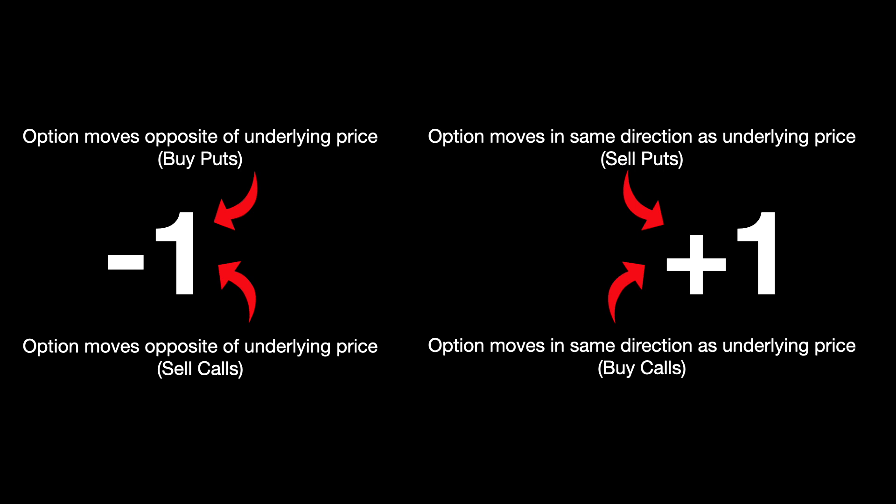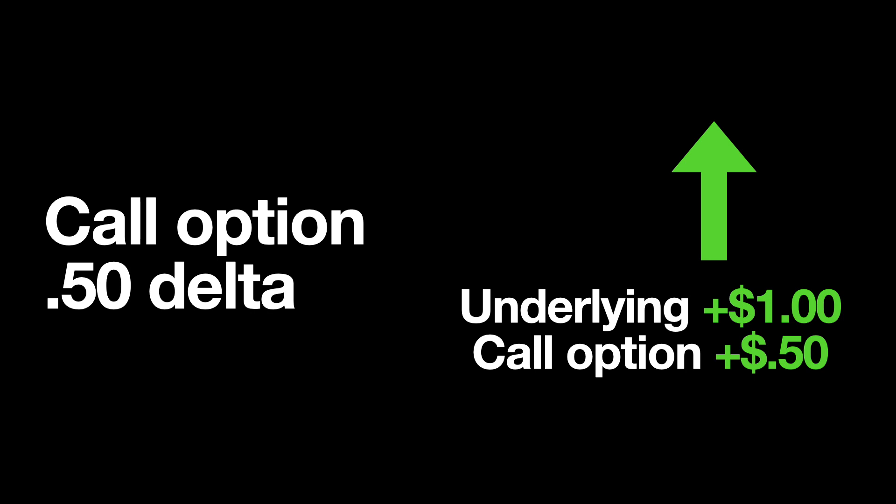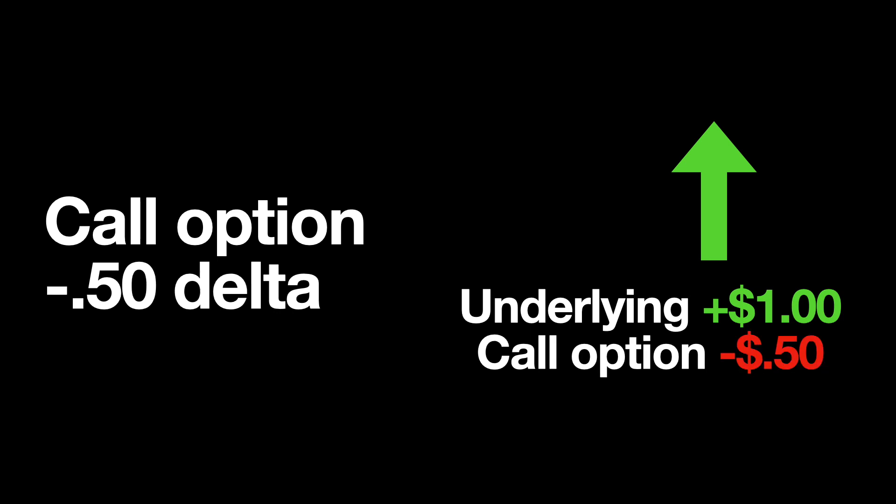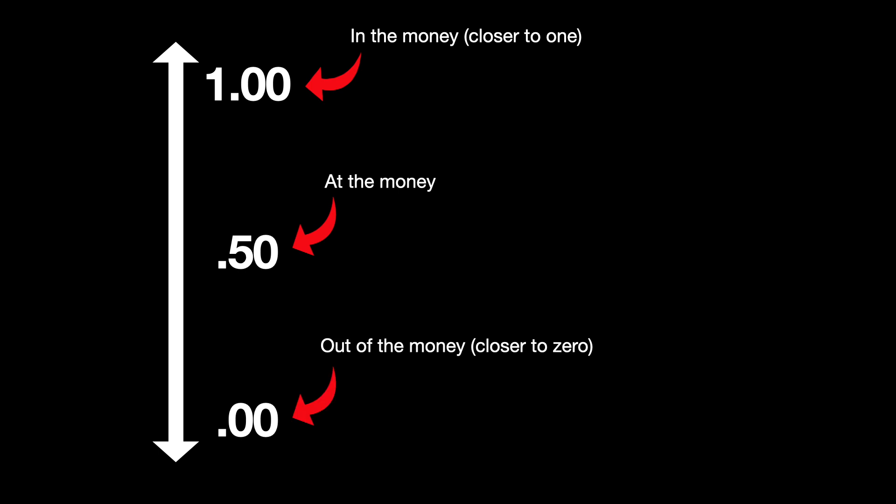But how much will the option's value change when the underlying price changes? That's precisely what Delta can tell us. For example, if you own a call option with a Delta of 0.5 and the underlying asset increases in price by $1, the option's price should increase by 50 cents. And if you're short a call option with a Delta of negative 0.5 and the underlying increases by $1, the option price should decrease by 50 cents. Delta also tells you how in the money or out of the money an option is. At the money options typically have a Delta of around 0.5, in the money options have a Delta closer to 1, and out of the money options have a Delta closer to 0.